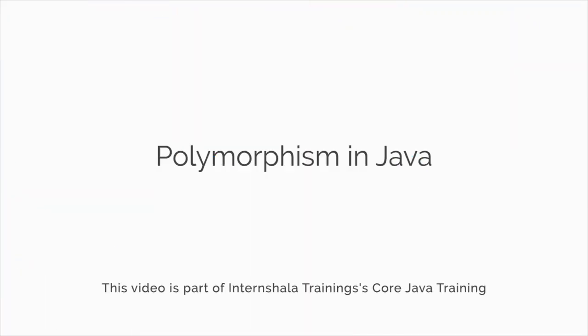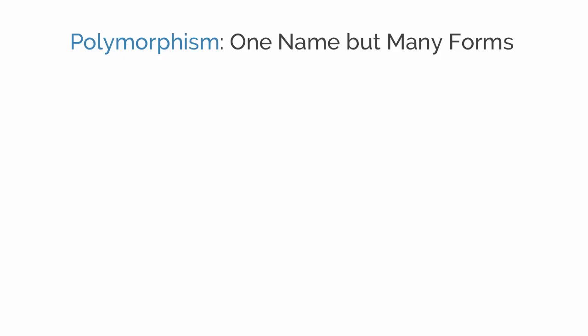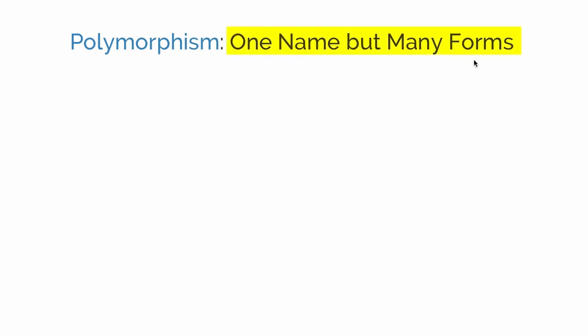In this video we will learn about polymorphism. Polymorphism is a concept of object-oriented programming in Java. Polymorphism is derived from the Greek words poly, meaning many, and morph, meaning forms. So we can define polymorphism in Java as one name but many forms.